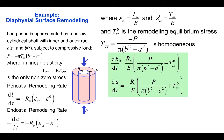So now, using these relations, we can rewrite our periosteal and endosteal remodeling rates as db/dt = (R_p/E)(P/(π(b² − a²)) + T_zz⁰).